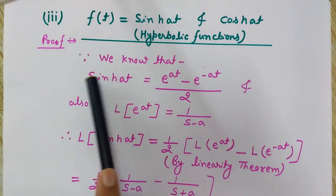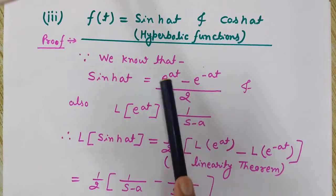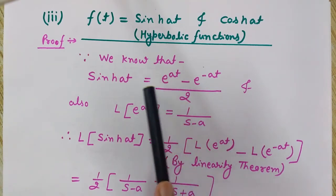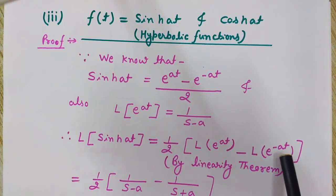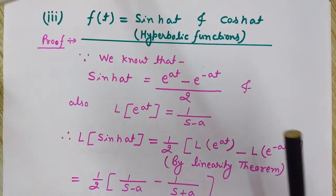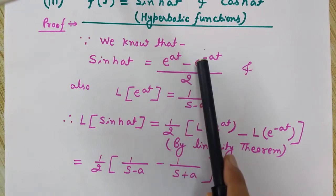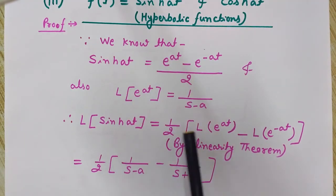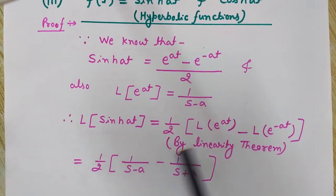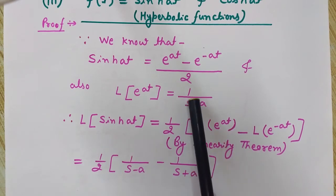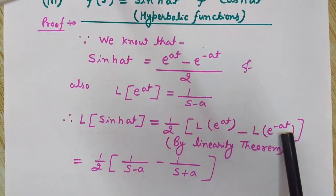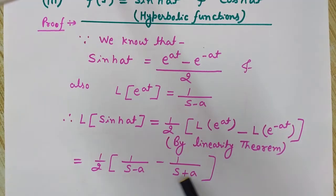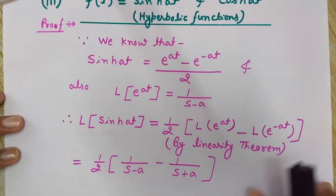By the linearity theorem, the Laplace transform of sinh(at) can be written as one-half times the Laplace transform of e^(at) minus the Laplace transform of e^(-at). Substituting the formula, the Laplace transform of e^(at) is 1/(s minus a), and the Laplace transform of e^(-at) is 1/(s plus a).